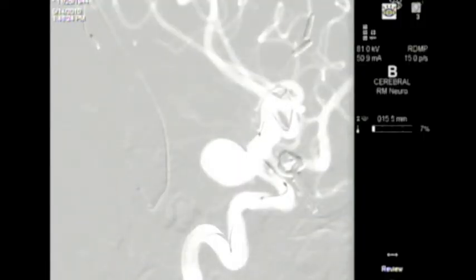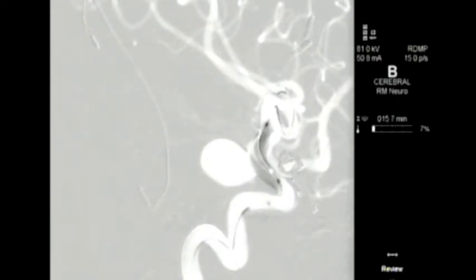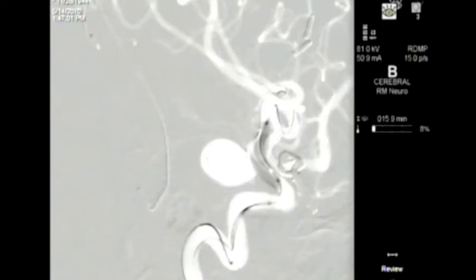A balloon is inflated across the neck of the aneurysm within the intracranial carotid artery. The purpose for this balloon is to seal off the neck of the aneurysm and keep the coils inside the aneurysm and prevent them from herniating back inside the normal carotid artery.